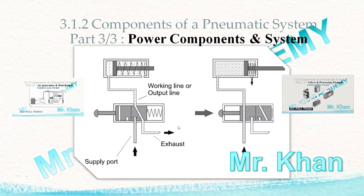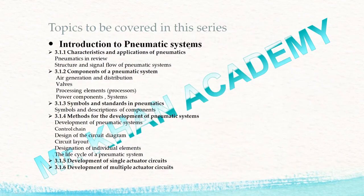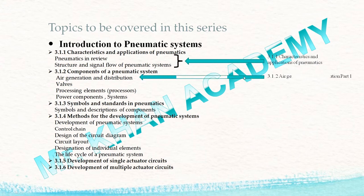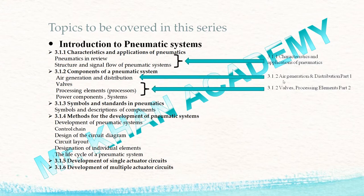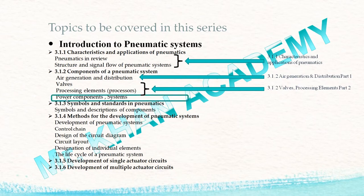Let's start with the content. The topics I'm going to cover in series 3.1 — I already covered 3.1.1, and Part 1 and Part 2 of 3.1.2: air generation system and valves and processing elements. Today I'm going to cover the power components and system, and in future I'm going to cover symbols and standards in pneumatics, methods of developing pneumatic systems, and various circuits including single acting and multi-actuator circuits.